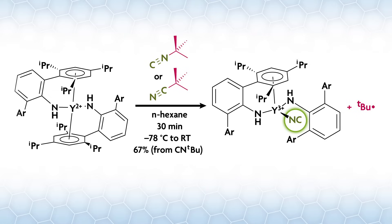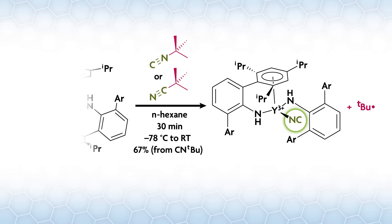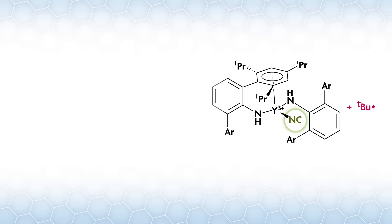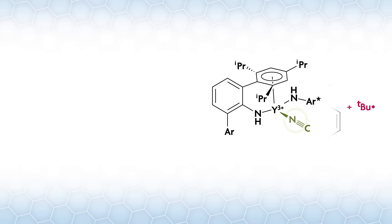Probably the best evidence that the complex is the isocyanide is the C13/Y89 coupling constant in the C13 NMR spectrum. Yttrium has a spin-1/2 nucleus, and the coupling to the isocyanide carbon in our compound is 9.8 hertz.